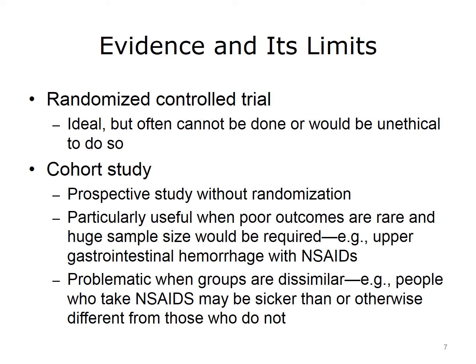Cohort studies can be useful when poor outcomes are pretty rare, such that a huge sample size would be required. For example, upper gastrointestinal hemorrhage that occurs with non-steroidal anti-inflammatory drugs, or NSAIDs, such as Motrin and Naproxen, turns out to be relatively rare. We see it in clinical practice because so many patients take these drugs, but the rate of bleeding from NSAIDs is actually relatively low. It is difficult to do a clinical trial to detect that, so a cohort study can help us in a situation where these poor outcomes are rare.